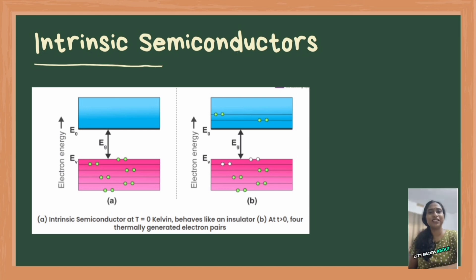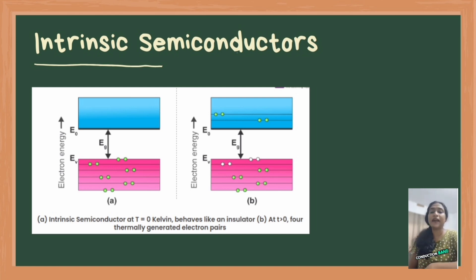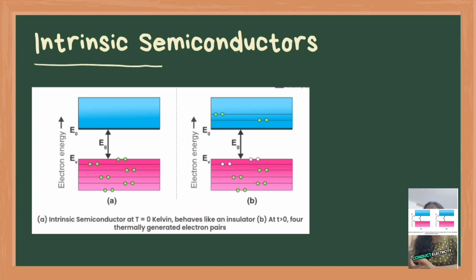Let's discuss intrinsic semiconductors. Intrinsic semiconductors are pure semiconductors with no impurities. The conductivity of intrinsic semiconductors increases with temperature because thermal energy excites more electrons to jump from the valence band to the conduction band, creating free charge carriers. Regarding band structure, the valence band contains the highest range of electron energies where electrons are bound to atoms. The conduction band has the range of electron energies above the valence band where electrons are free to move and conduct electricity.